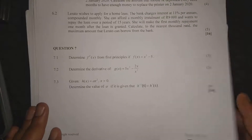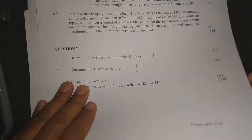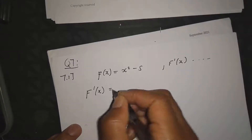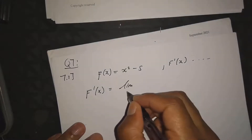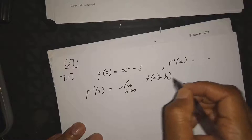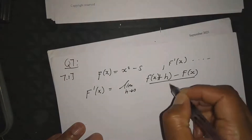Question 7.1: find the first derivative using the first principle. We have f(x) = x² - 5. We need to find f'(x) using first principles. The first principle formula is: f'(x) = limit as h approaches zero of [f(x + h) - f(x)] divided by h.